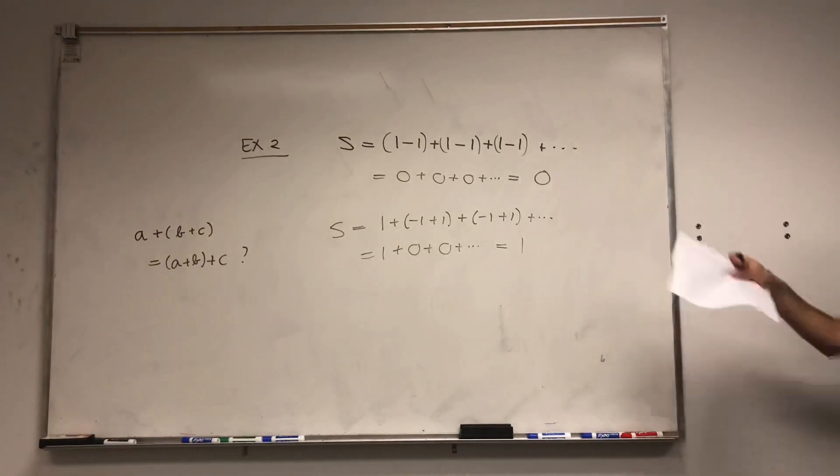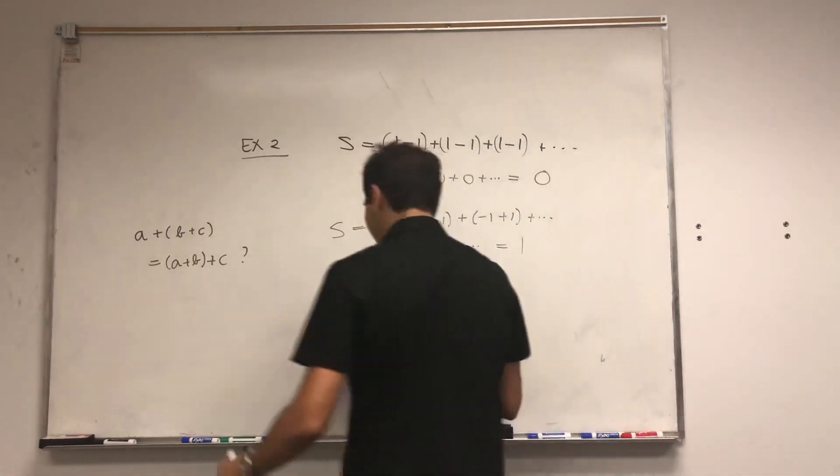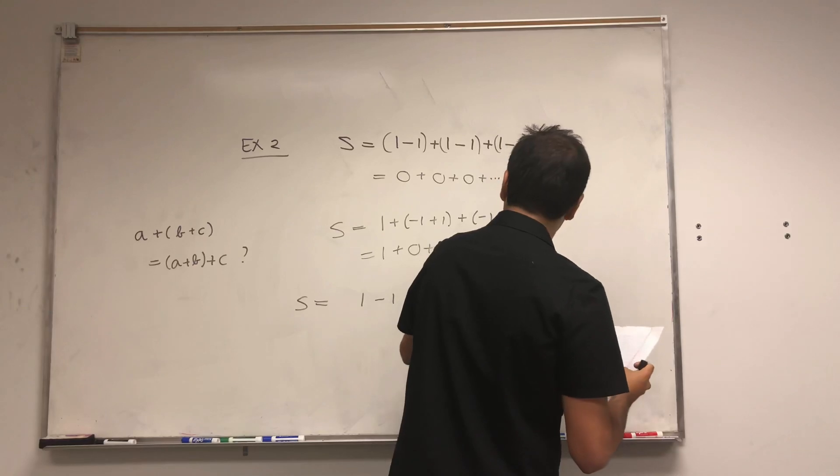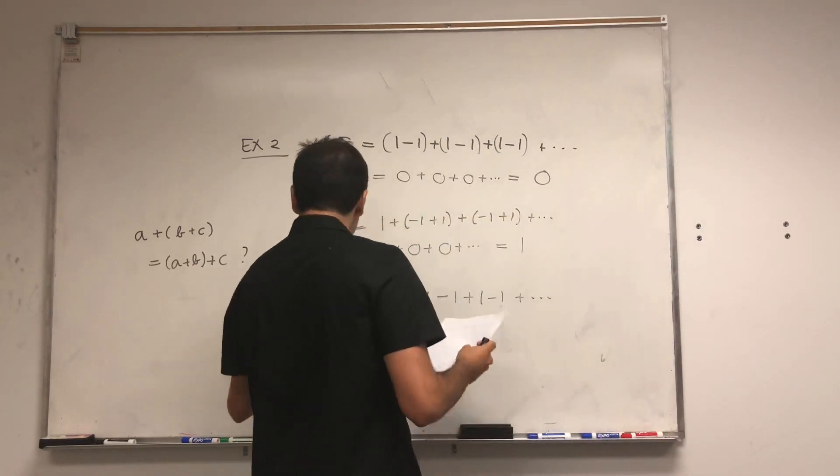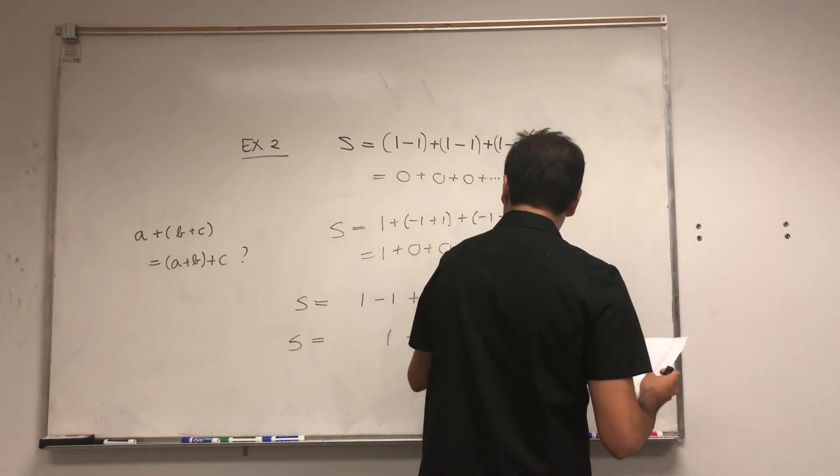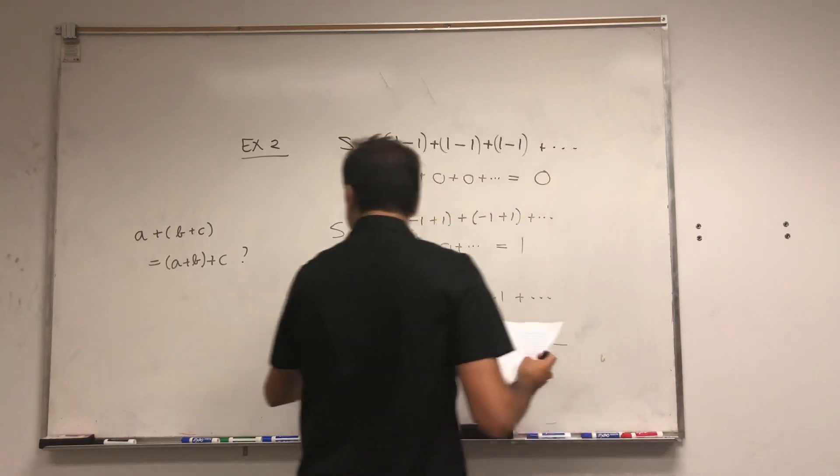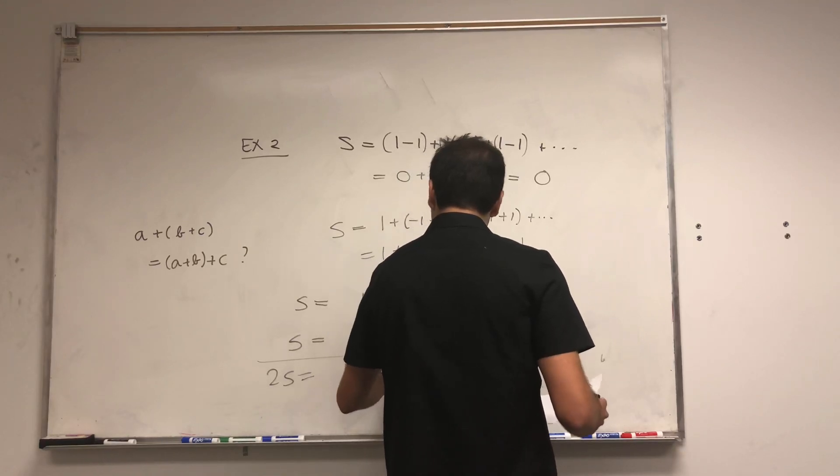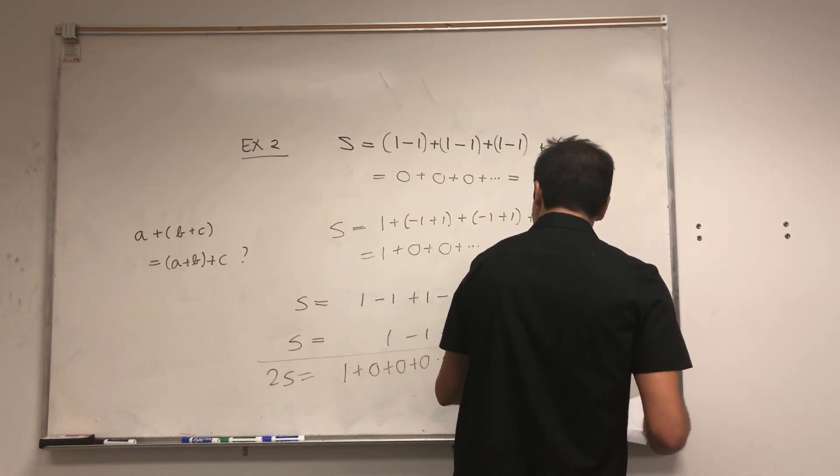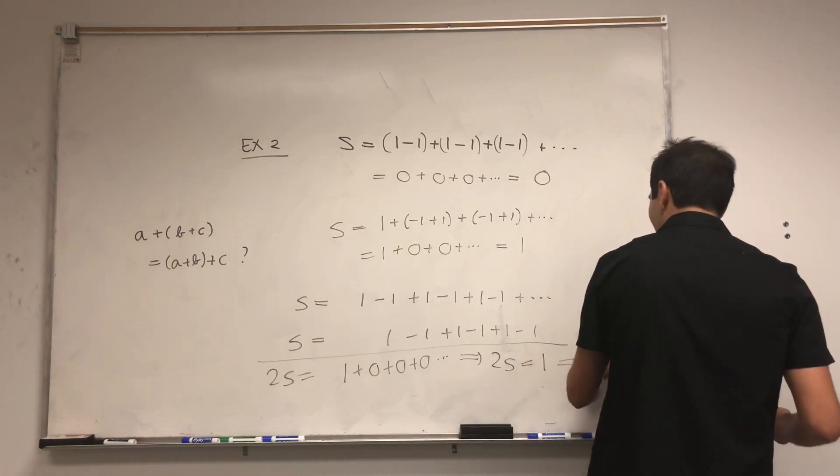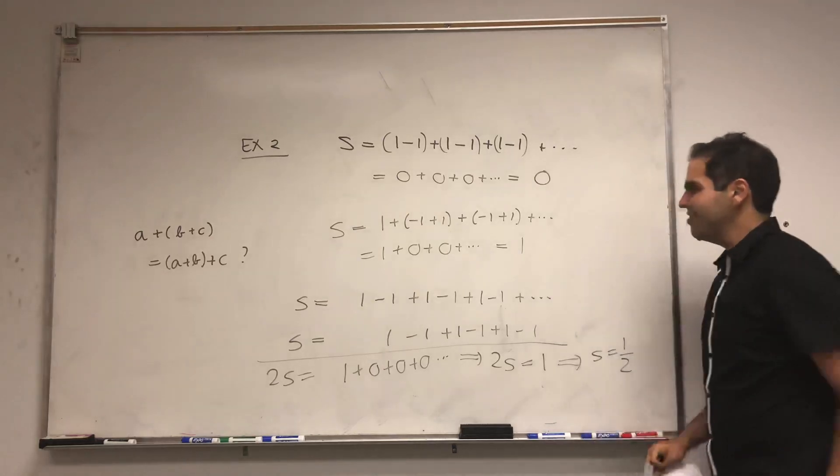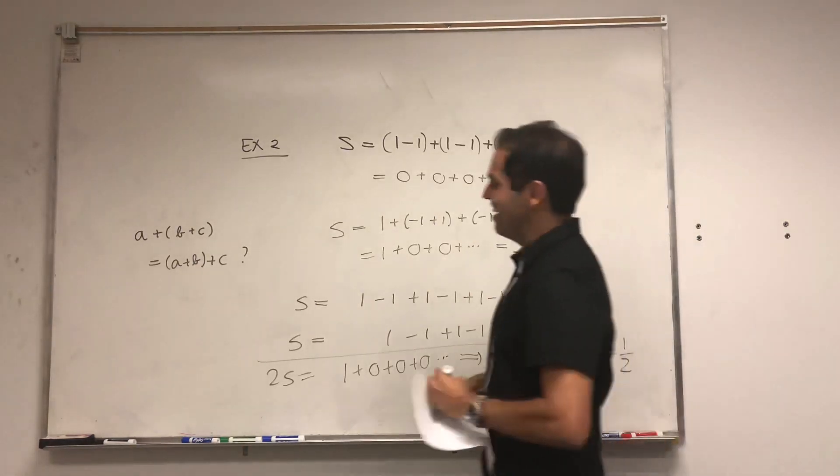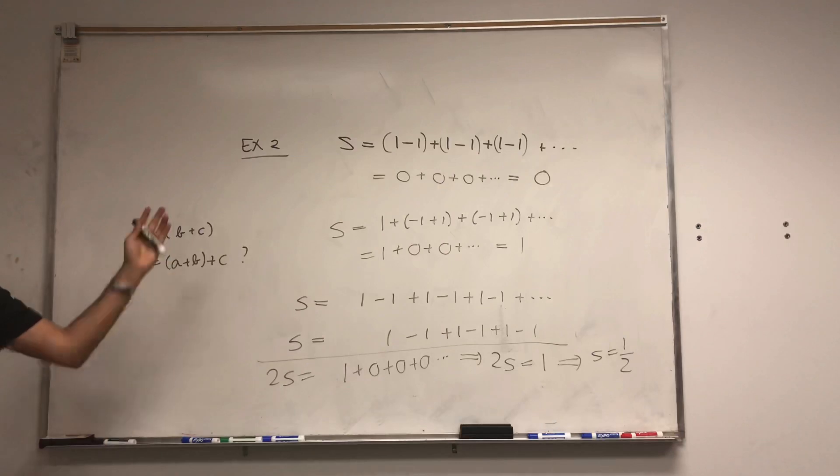So if this were true, then 0 would be 1, but you can have more ridiculous things like S. Well, it's 1 minus 1 plus 1 minus 1 plus 1 minus 1. But S is also equal to 1 minus 1 plus 1 minus 1 plus 1 minus 1. So if you add those two up, again, assuming you can do this, then 2S would be 1 plus 0 plus 0 plus 0. So 2S would be 1. So S would actually be 1 half. So there are many values of S. There are at least 0, 1, and 1 half. And so again, this is ridiculous, okay?